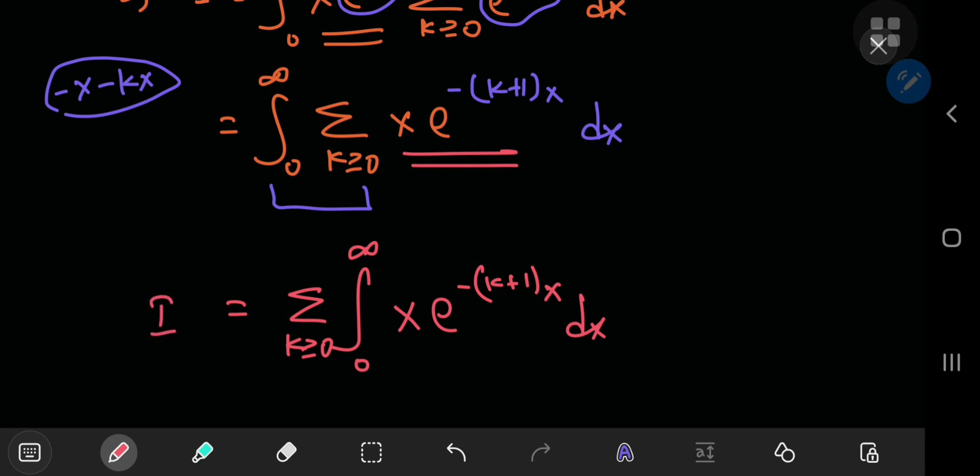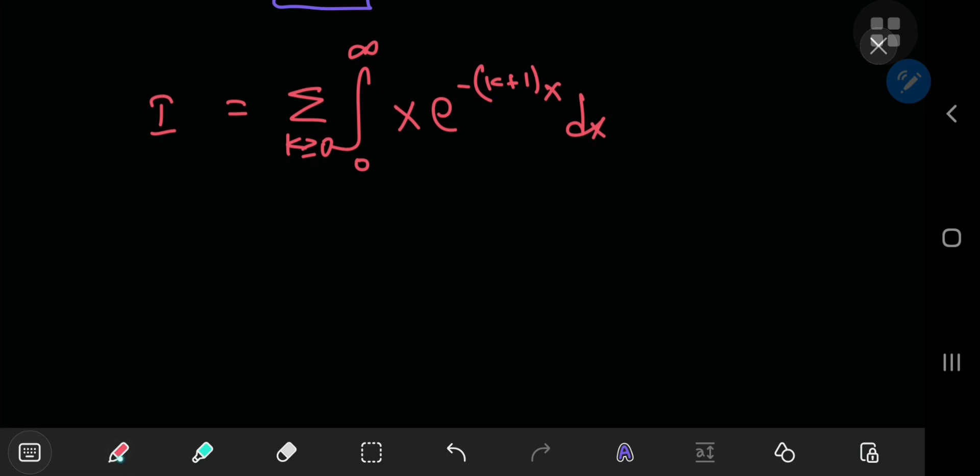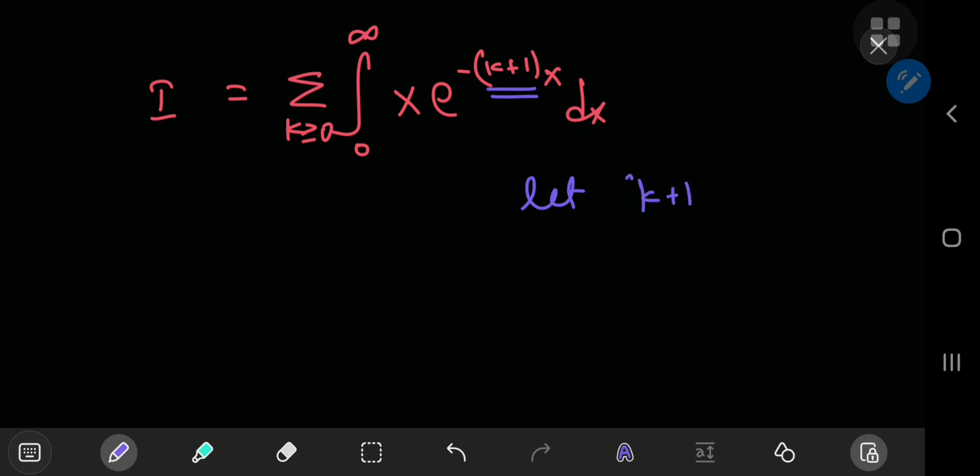What you have can be evaluated quite easily using a substitution. And the aim of the substitution is to somehow get this k plus 1 term outside of the integral. So it's a good demonstration of your mathematical pullout skills. A good pullout game is quite necessary in mathematics and life. So you let k plus 1 times x equal to t, which implies that x equals t by k plus 1.